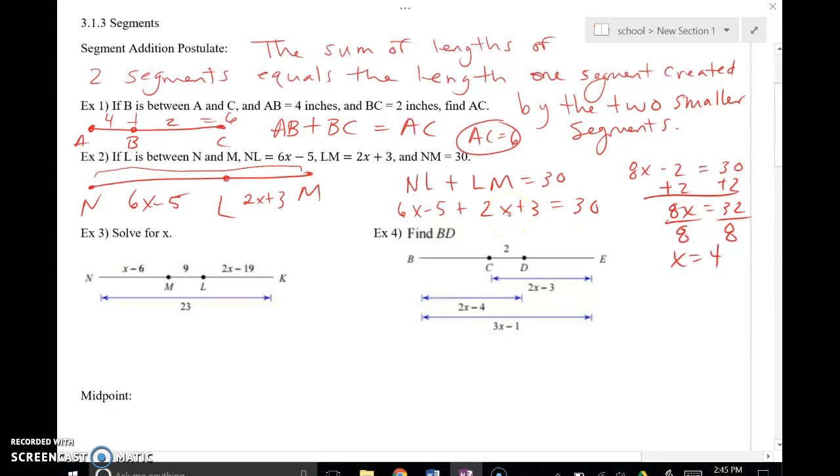Just one more thing to clarify real quick, to make sure we're all on the same page. Notice that I just have the two letters here, not a segment symbol above it. What you are supposed to kind of know when you see just NL together, that means the distance from N to L. So I'm only talking about numbers. I'm not talking about an actual object, actual segment. So keep that in mind. If you see me ever write that without a symbol above it, I'm talking about distance or length, not an actual object.